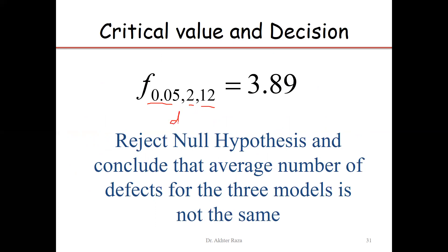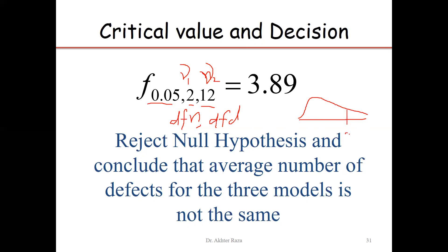The degrees of freedom for the numerator (dfn) is 2, because we have three treatments. The degrees of freedom for the denominator (dfd) is 12. The critical value is 3.89, and the observed F value is 8.49. Since 8.49 is much larger than the critical value of 3.89, we reject the null hypothesis and conclude that the average number of defects for all three models is not the same.